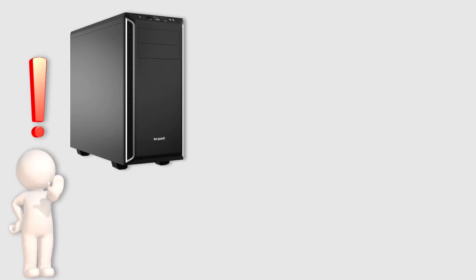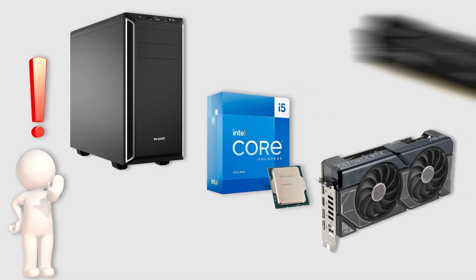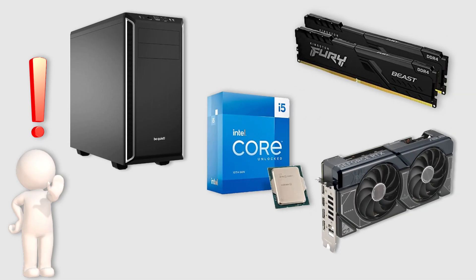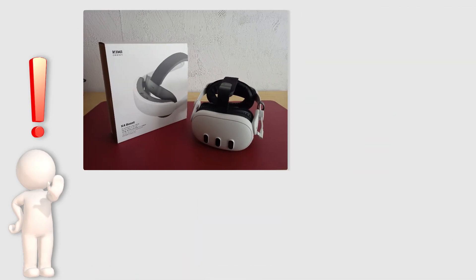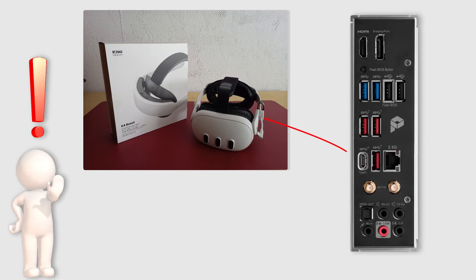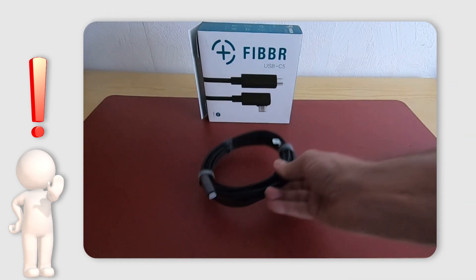Let's first establish a baseline for talking about these recommended settings. My PC is a 13600K twinned with a 4070 Super and 64GB of DDR4 RAM. I also have two separate NVMe drives, one for Windows 11 and the other for iRacing. My Quest 3 is connected to the PC via a USB-C cable that goes directly to a USB-C port on the back of my mainboard. The cable I had used for many years sadly died a few months back and I have since replaced it with a new cable from Fiber.